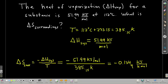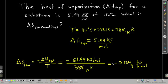For example: the heat of vaporization for a substance is 51.99 kJ/mol at 112°C. We want to find the change in entropy for the surroundings. Convert temperature to Kelvin: 112 + 273.15 = 385.15 K. The change in enthalpy for the system is 51.99 kJ/mol. So delta S surroundings equals negative 51.99 kJ/mol divided by 385.15 K, giving approximately negative 0.135 kJ/(K·mol).